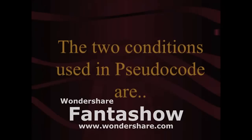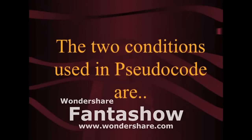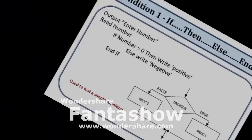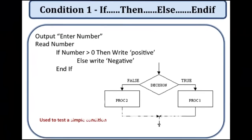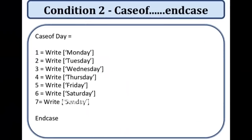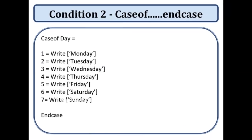The two conditions that can be used in pseudocode are: if, then, else — and if, case of, and end case.